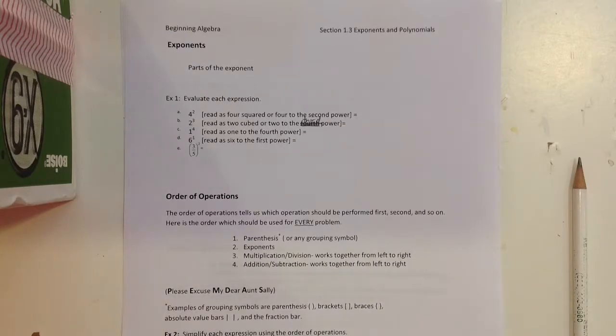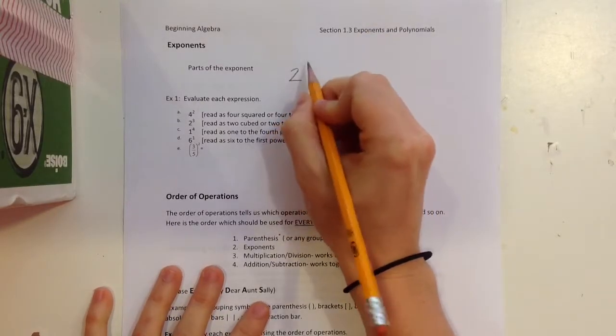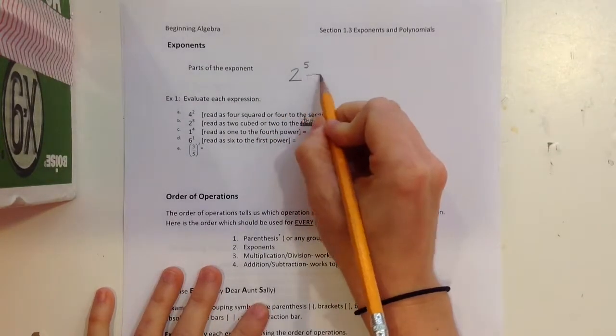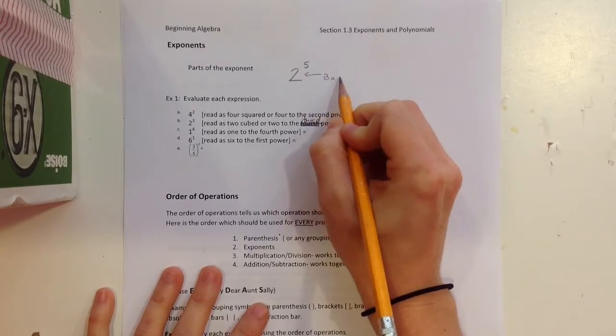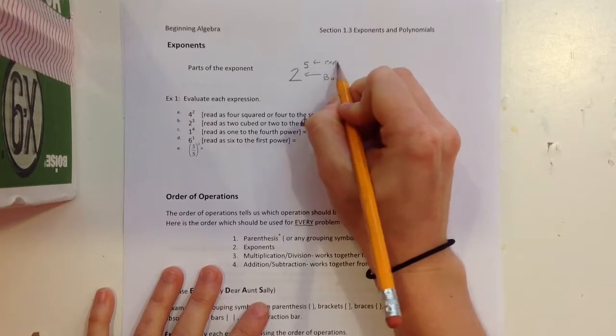Alright, the next section is 1.3, exponents and polynomials. First we're going to talk about the parts of an exponent. Let's say 2 and a little bitty 5. This 2 is called the base of an exponent, and this little bitty 5 is the exponent or power.